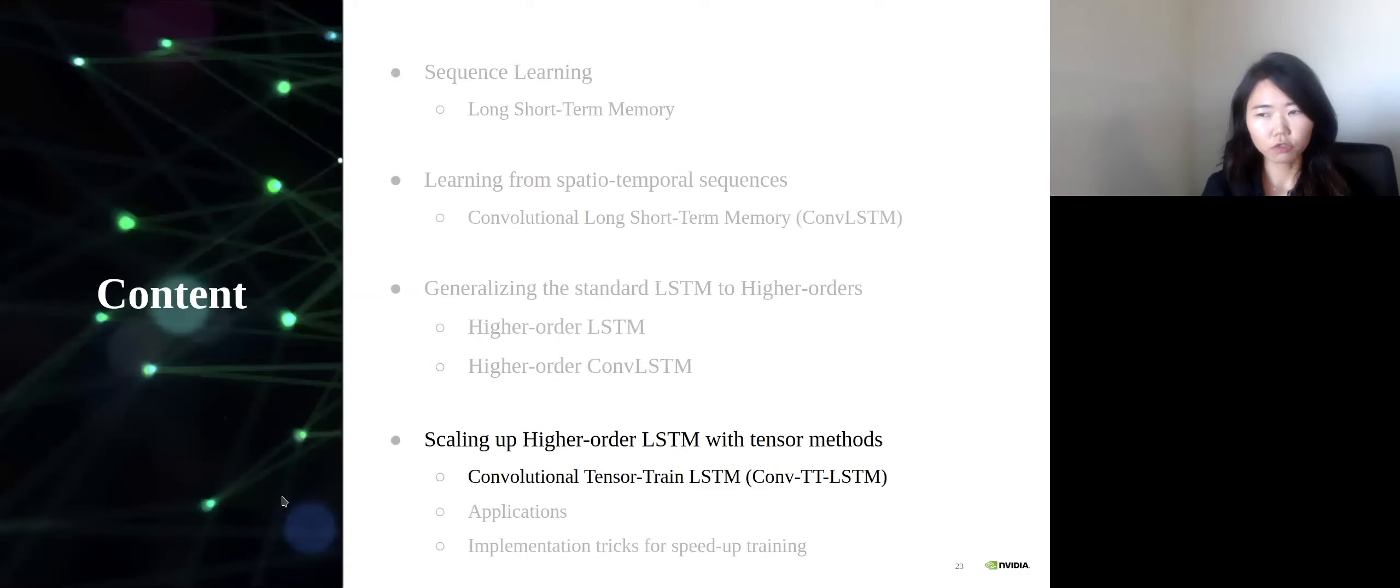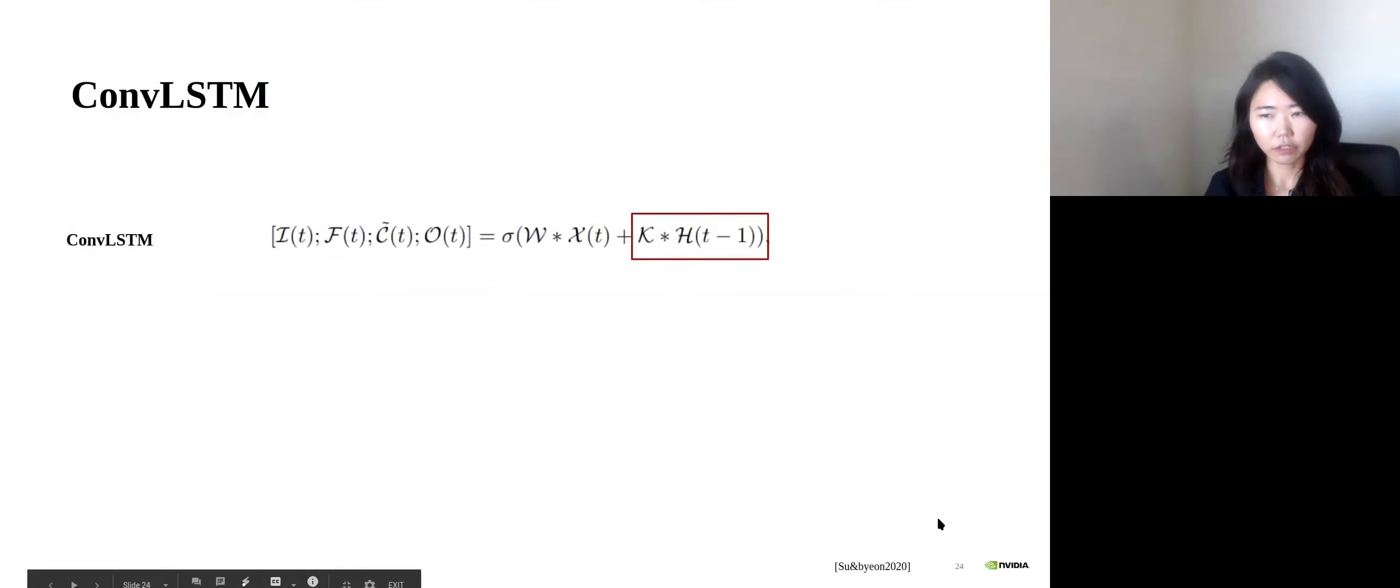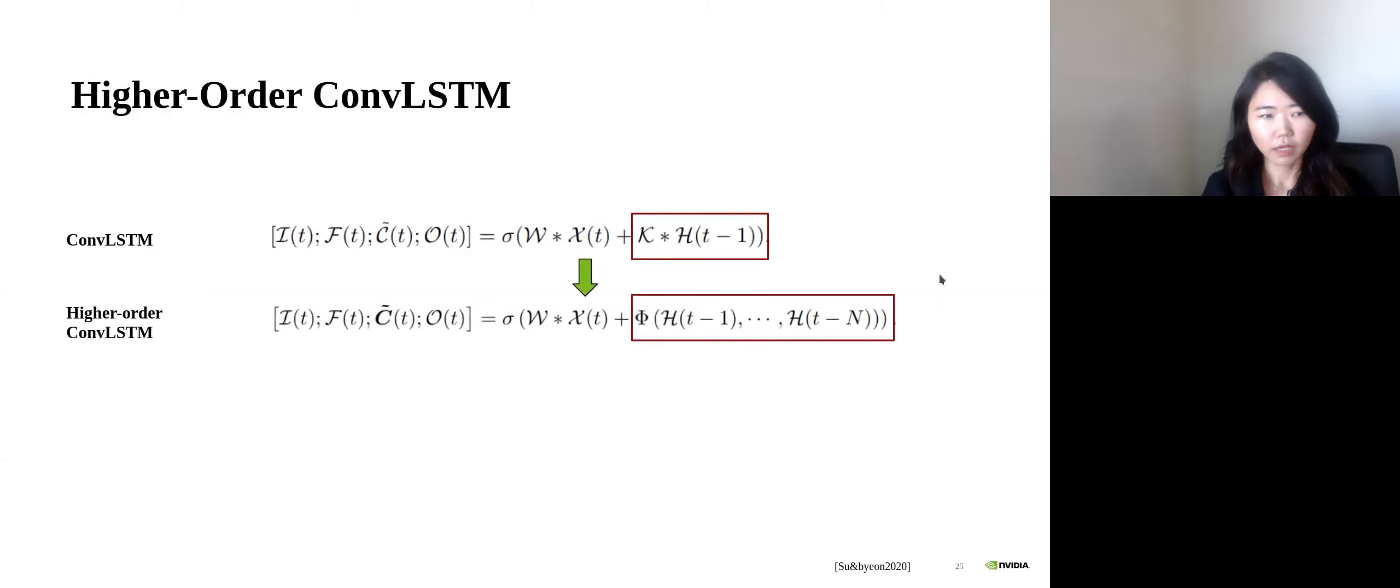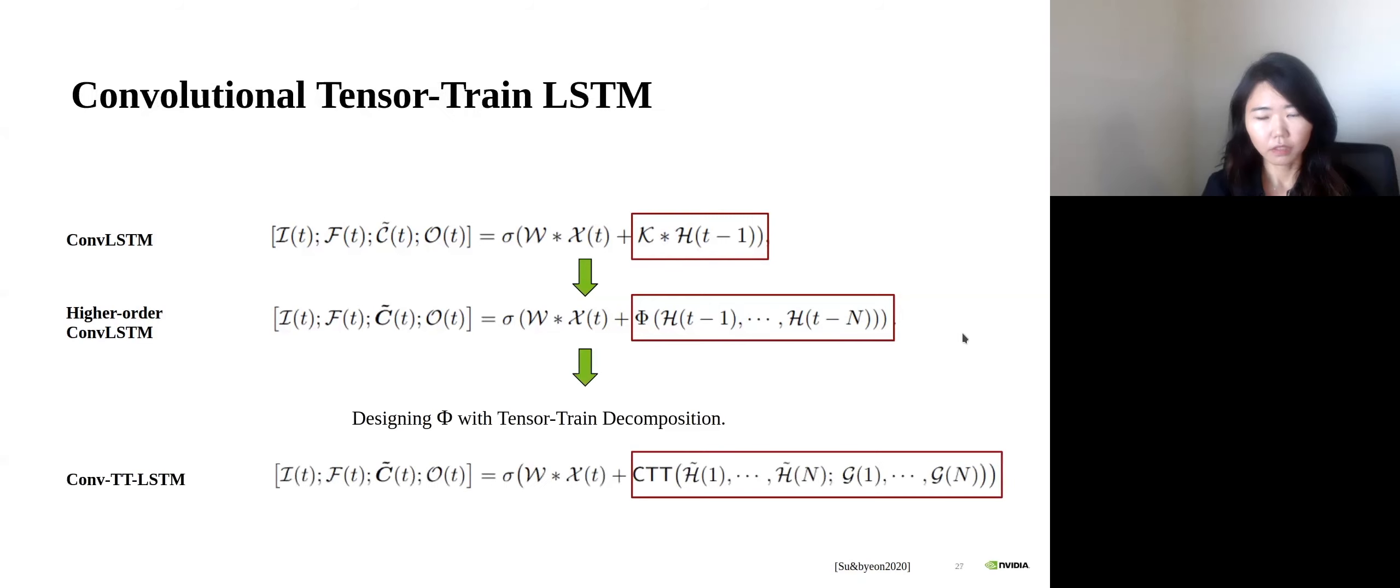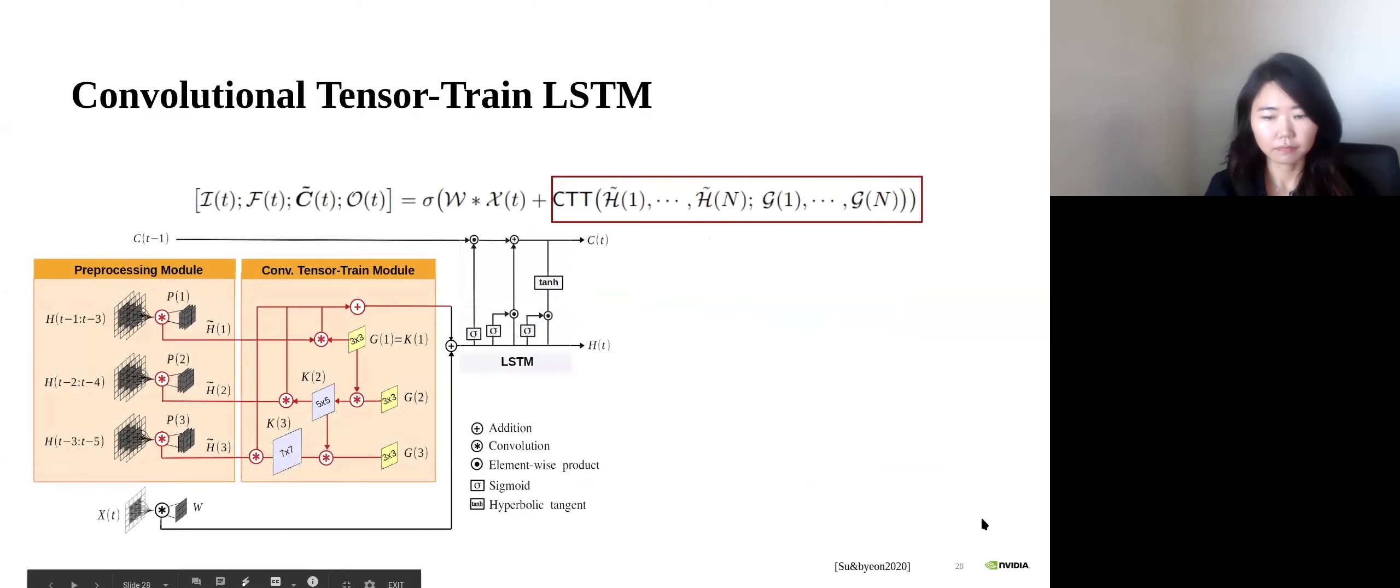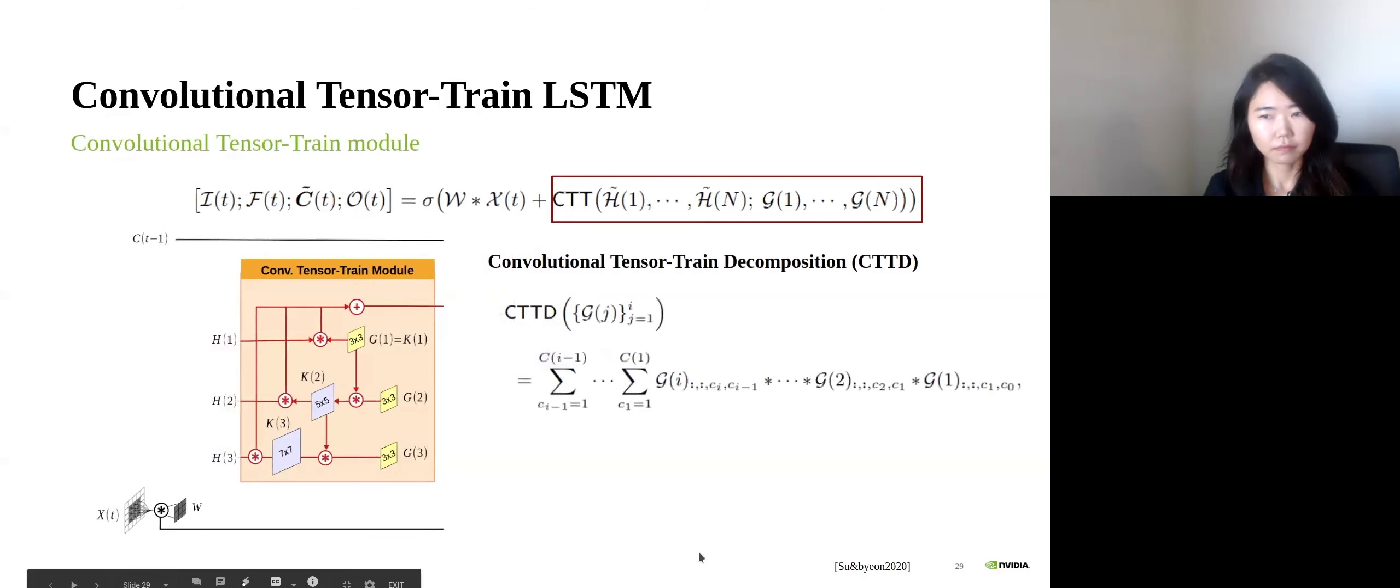Now I will introduce our model, convolutional tensor-train LSTM to satisfy all these requirements. Let's first recap the previous models. This is the standard convo LSTM shown earlier. And this is the higher order LSTM with the multiple hidden states. The core idea of tensor-train LSTM is to design this function with the tensor-train decomposition shown here. This is the main structure of our model. I will explain each module one by one. Let's start with the convolutional tensor-train model here. For this, we first introduce convolutional tensor-train decomposition.